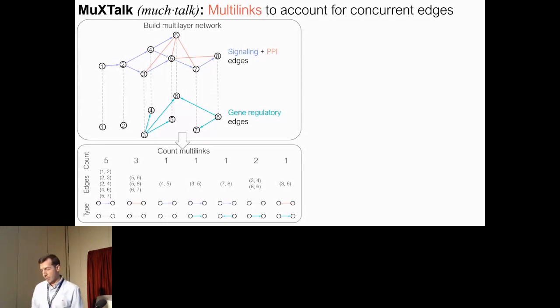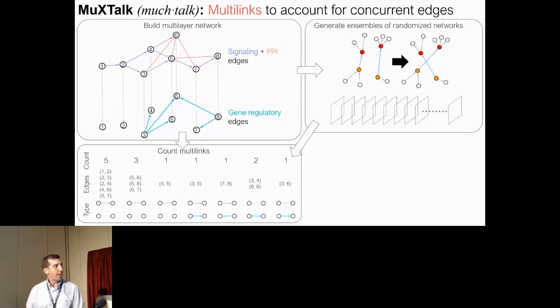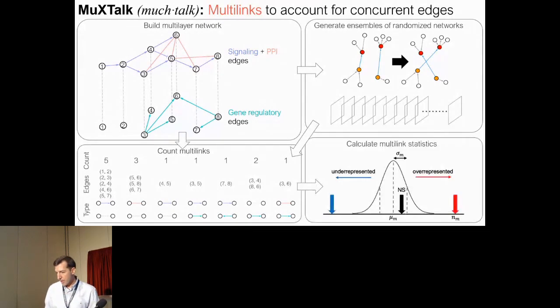In other words, we want to try to understand whether they're over- or underrepresented in the network. To do that, we generate a large ensemble of randomized networks, and then we compare the counts of each multilink type with the counts obtained from these randomized networks to calculate z-scores and empirical p-values.